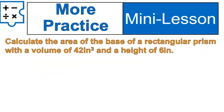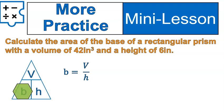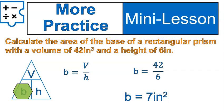Some more practice — go ahead and try this one out. Welcome back. For this one, we're calculating the area of the base, so our formula will be volume divided by height. If you're using that pyramid, you'll be covering over the B. Our volume is 42 cubic inches and our height is 6 inches, so we're taking 42 divided by 6, which leaves us with 7 square inches, since it's an area.